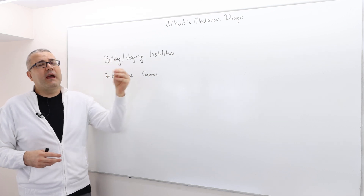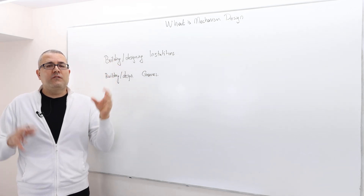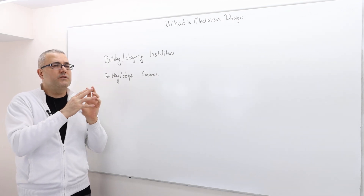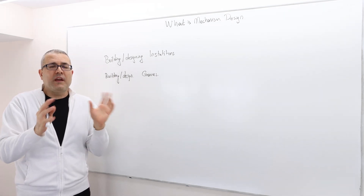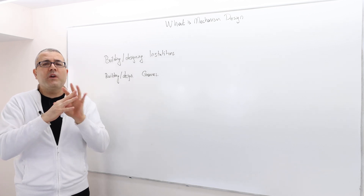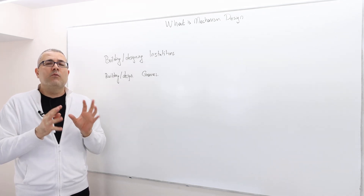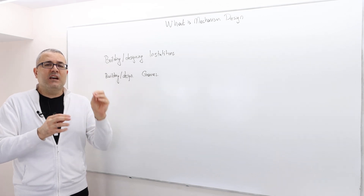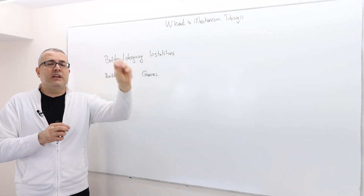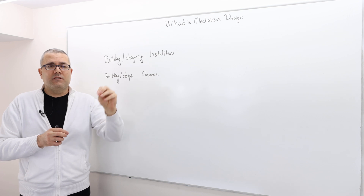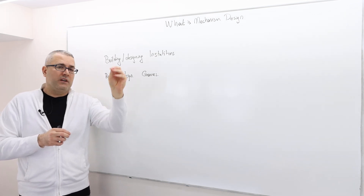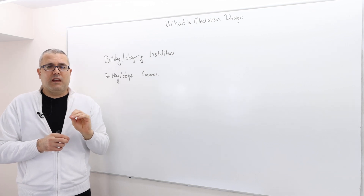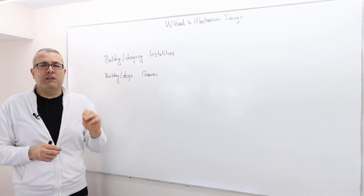Mechanism design looks at an environment — whether it's an auction, a school choice, a matching, or a voting environment — and asks: can I design a game in order to achieve the objectives you gave me, whether it's fairness, efficiency, or revenue maximization? This is what mechanism design does.